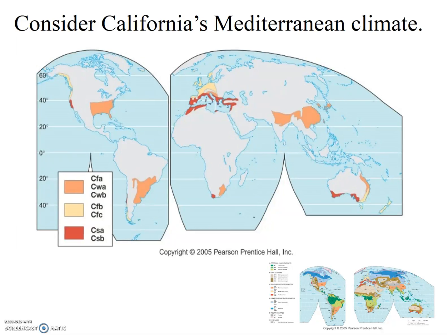Importantly, the Mediterranean climate type is the only climate type that has wet winters and dry summers. Indeed, compared to most of the rest of the world, California and other locations with the Mediterranean climate is completely bizarre. Most places in the world have wetter summers than winters.